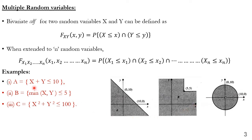The first example: x plus y should be less than or equal to 10. This is a straight line equation that cuts the x-axis at (10, 0) and the y-axis at (0, 10). Any area below this line is defined as region A. The second example: minimum of x and y should be less than or equal to 5. There is a square, and the point (5, 5) is shown. Any area less than (5, 5) represents region B.